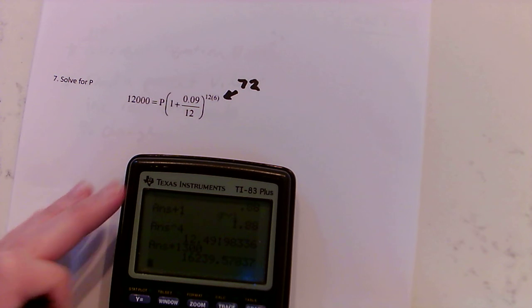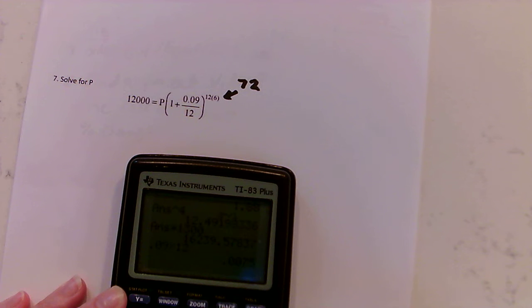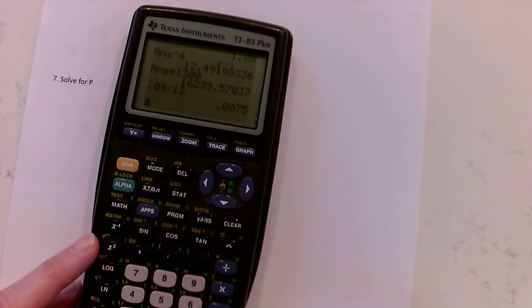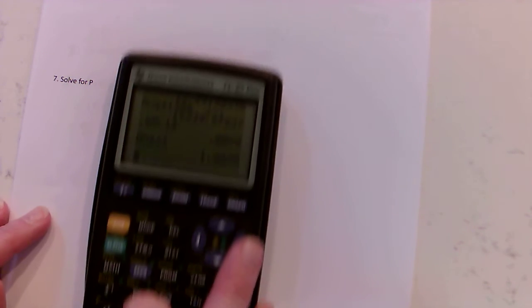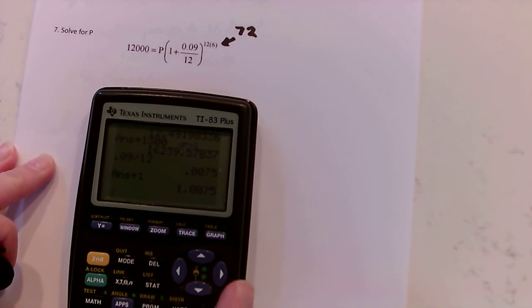Then it's parentheses first, so we're going to do 0.09 divided by 12. Then we're going to add one, so calculator if you can see, now I'm going to say plus one.